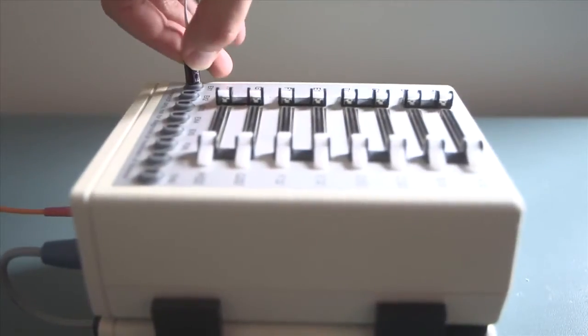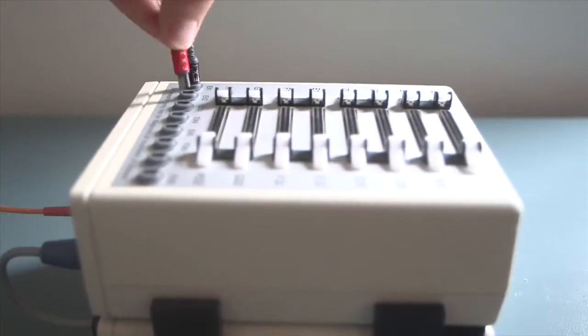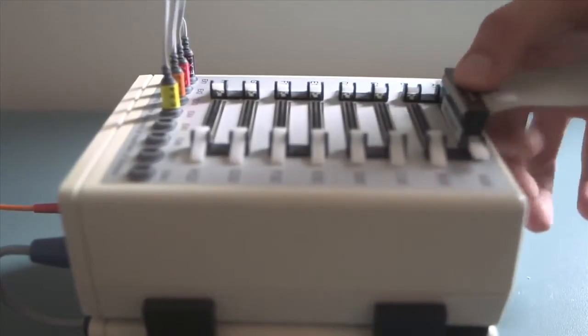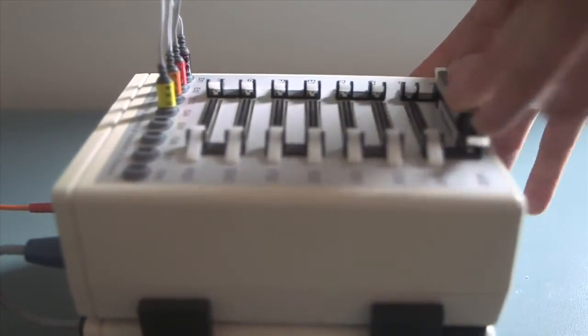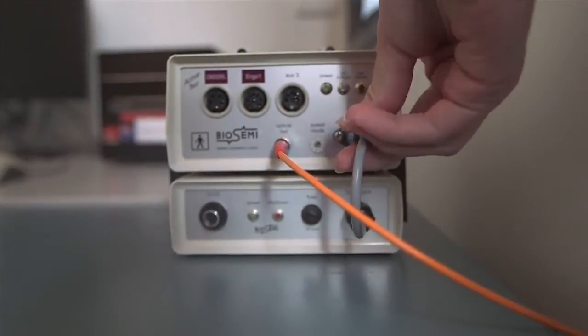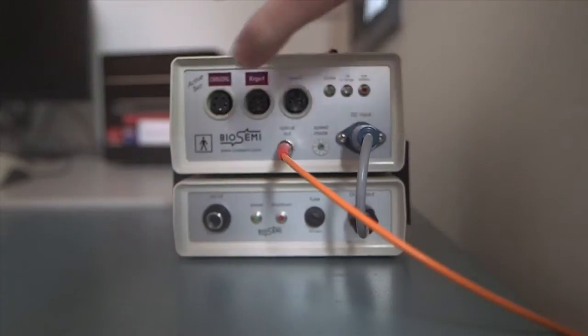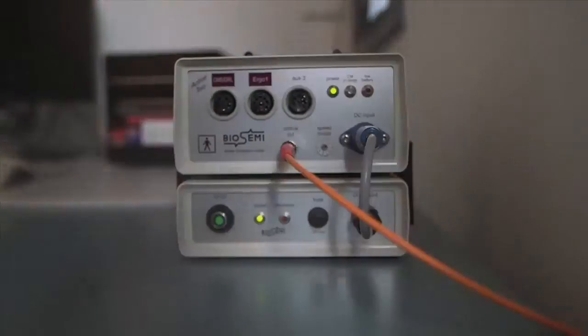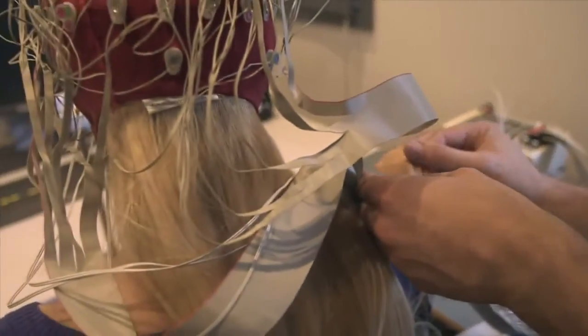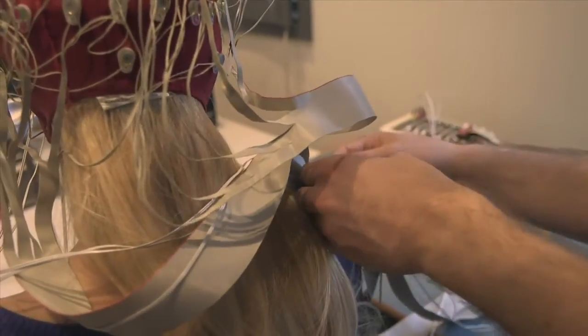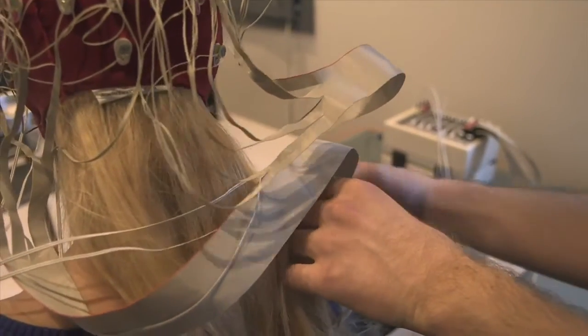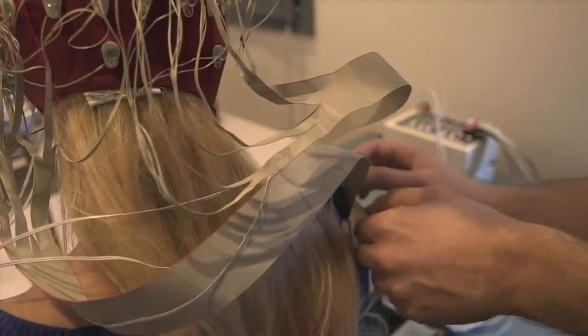The next step is to connect the external electrodes to the amplifier, as well as the two electrode sets. Connect the amplifier to the battery and switch it on. Once all the cables are connected to the amplifier, make sure you tape them to the participant's shoulder, and ensure that there's a fair amount of slack so that there'll be no pulling on the cables, even if the participant moves their head.